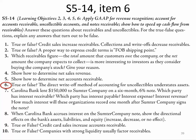Number six is a true or false question: the direct write-off method of accounting for uncollectibles understates assets. That is false. The direct write-off method actually overstates assets, because it fails to show the amount of receivables the company actually expects to collect — it shows every receivable whether the company will actually collect it or not.